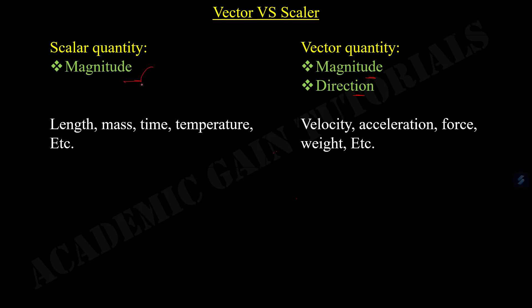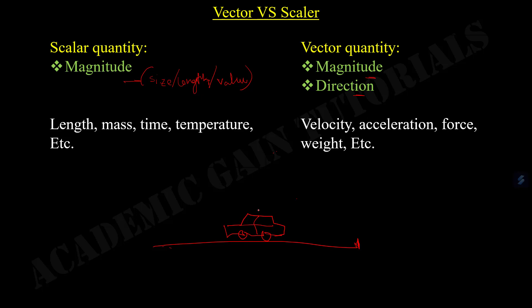A magnitude can be anything like size, length, or value. Let us take an example to understand better about scalar quantity and vector quantity. Suppose this is a road and a car is moving. We say that the car is moving at the speed of 20 meters per second. So we know the speed of this car, and this piece of information is known as scalar quantity because it only gives us a value — in other words, a magnitude.